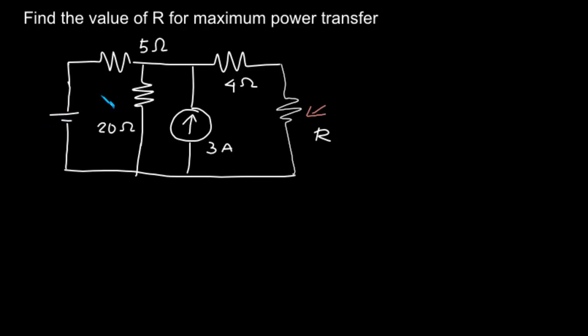It is actually irrelevant because we just have to find out the value of resistance. To do that, we have to find out either the Thevenin's equivalent resistance or Norton's equivalent resistance across these two terminals. It will be the same in both cases.